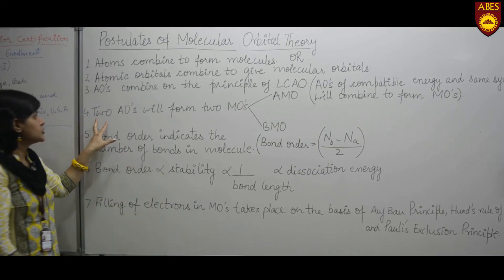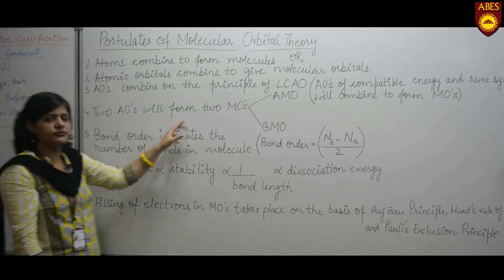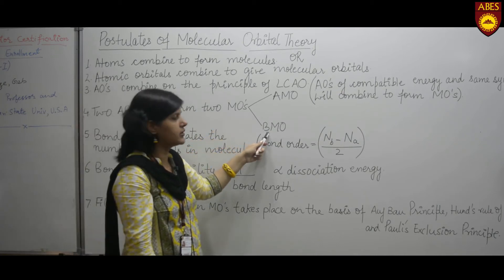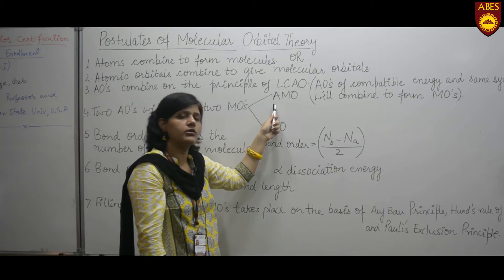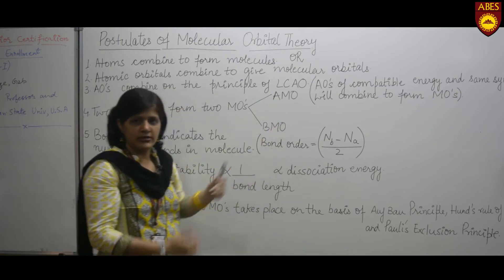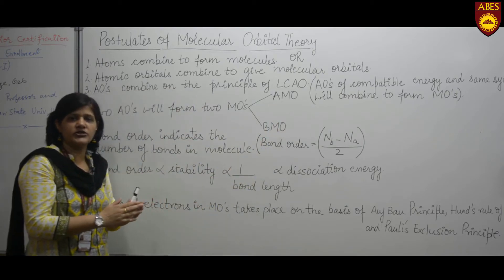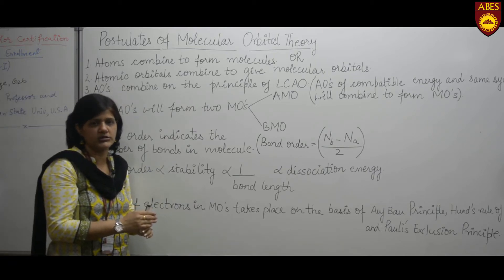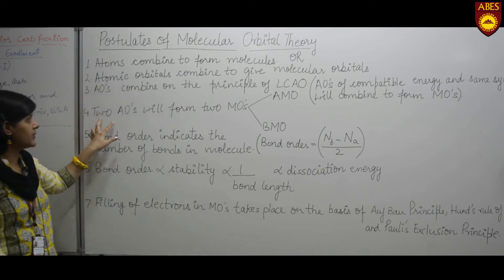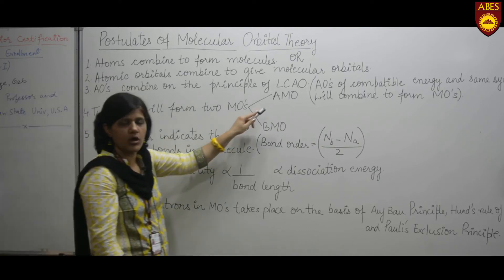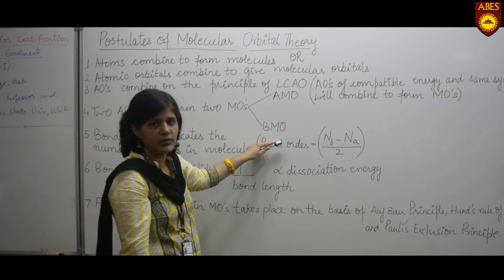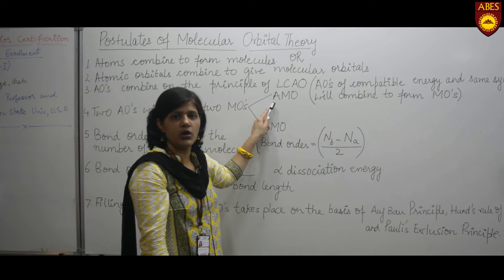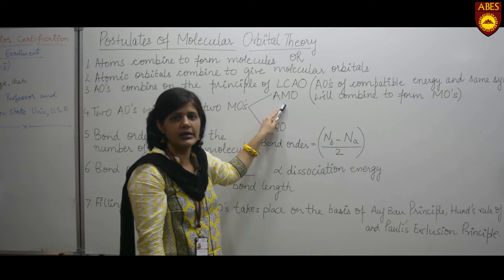Two atomic orbitals will combine to form two molecular orbitals — one will be a bonding molecular orbital and another will be an anti-bonding molecular orbital. This means that an equal number of atomic orbitals give the same number of molecular orbitals. If two combine, they form two orbitals: one bonding molecular orbital which is lower in energy, and one anti-bonding molecular orbital which is higher in energy.